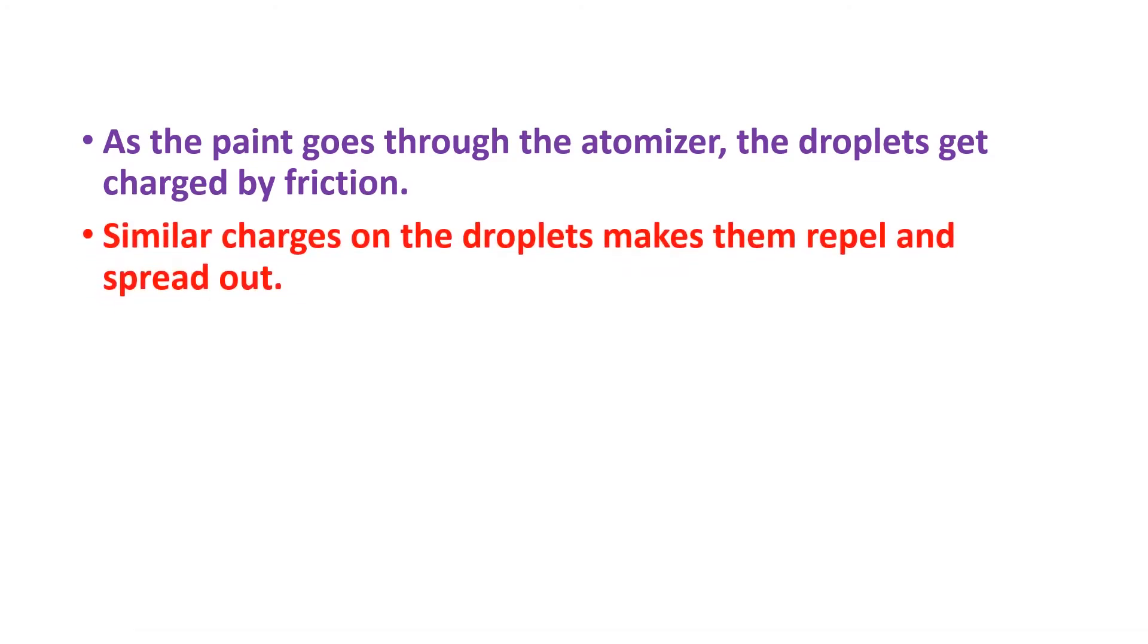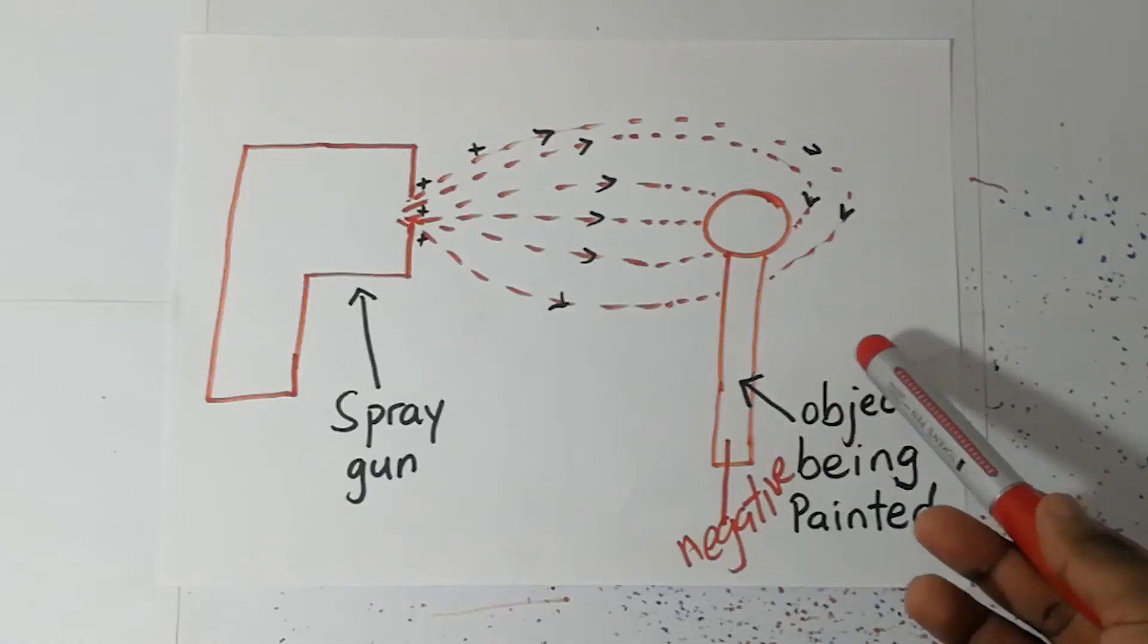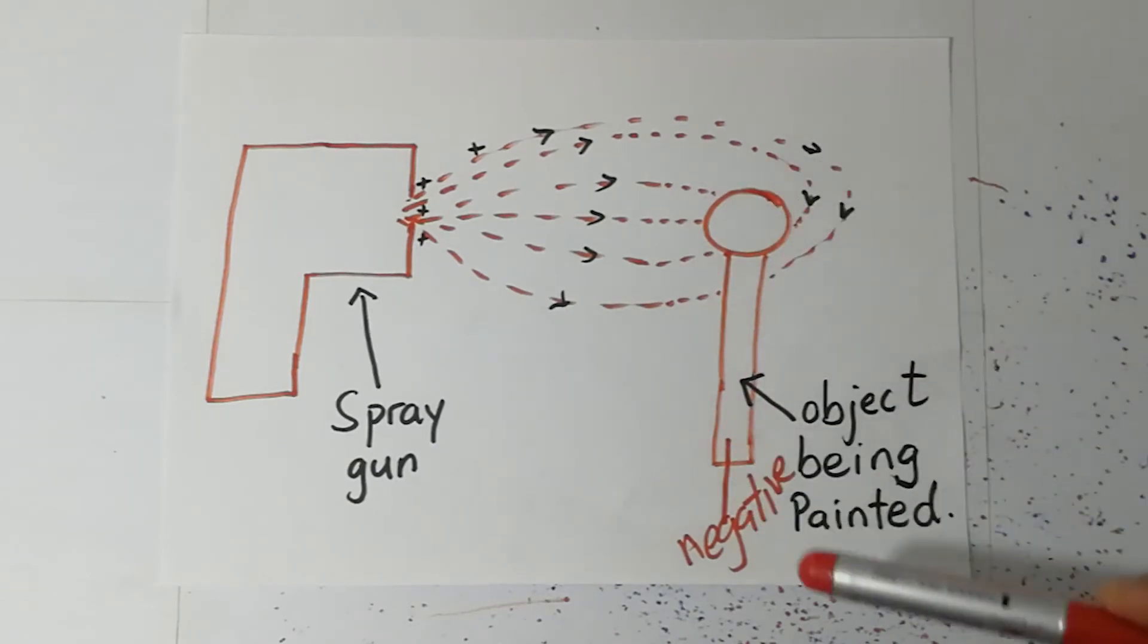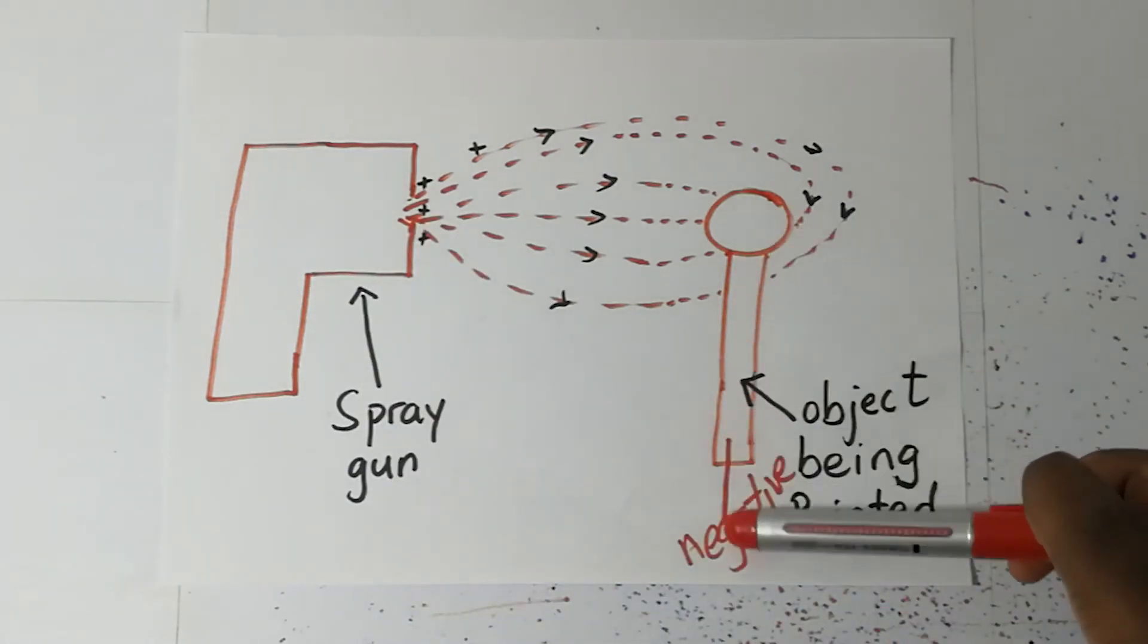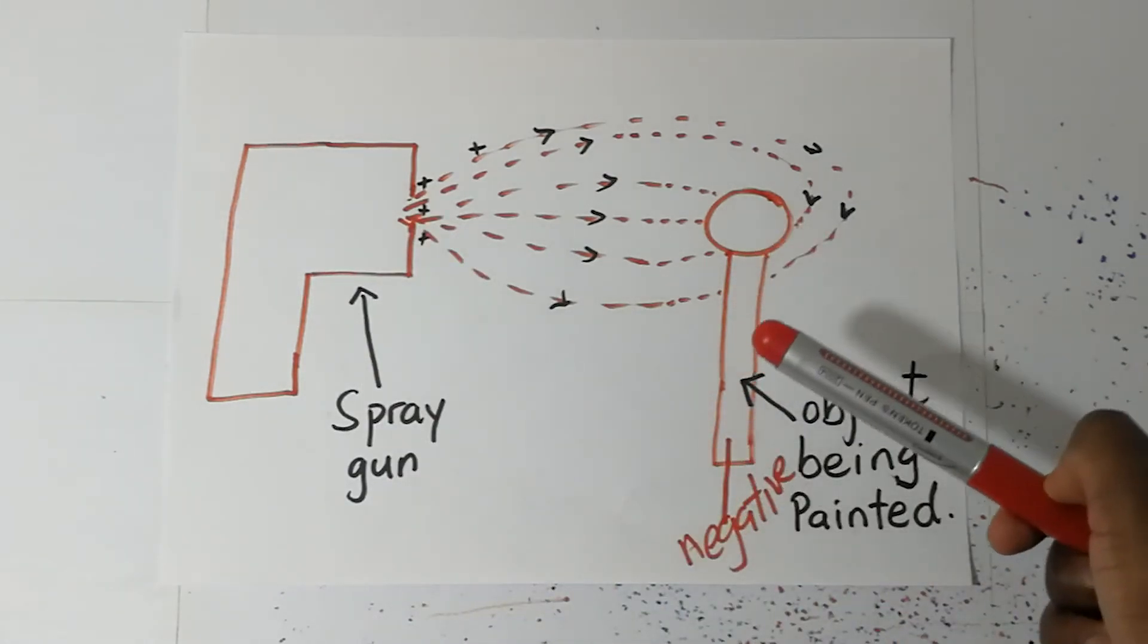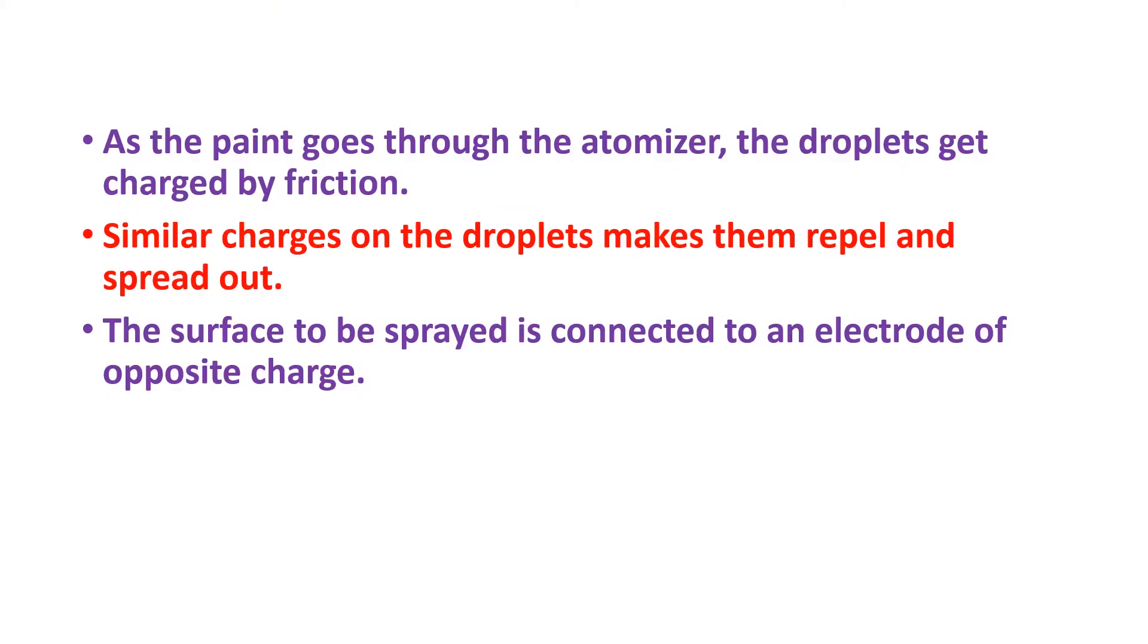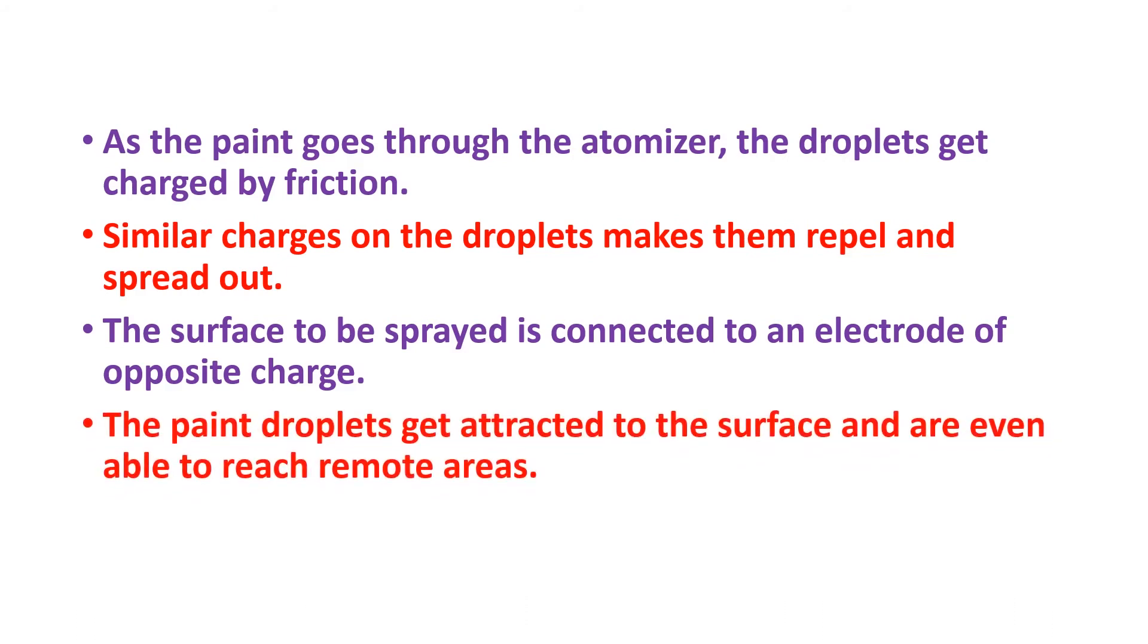As these particles spread out, the surface being sprayed is connected to an electrode of opposite charge. If the spray is positively charged, the surface is earthed or negatively charged. The paint droplets are attracted to the surface and can reach remote areas.